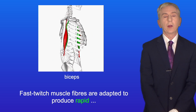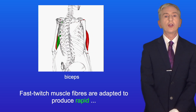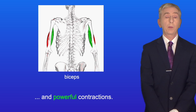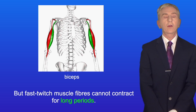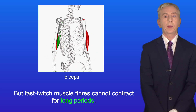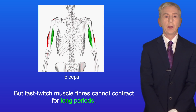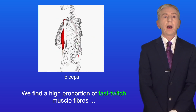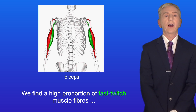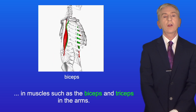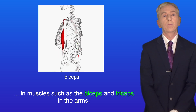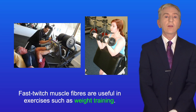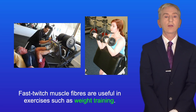Fast twitch muscle fibers are adapted to produce rapid and powerful contractions, but they cannot contract for long periods. We find a high proportion of fast twitch muscle fibers in muscles such as the biceps and triceps in the arms. Fast twitch muscle fibers are useful in exercises such as weight training.